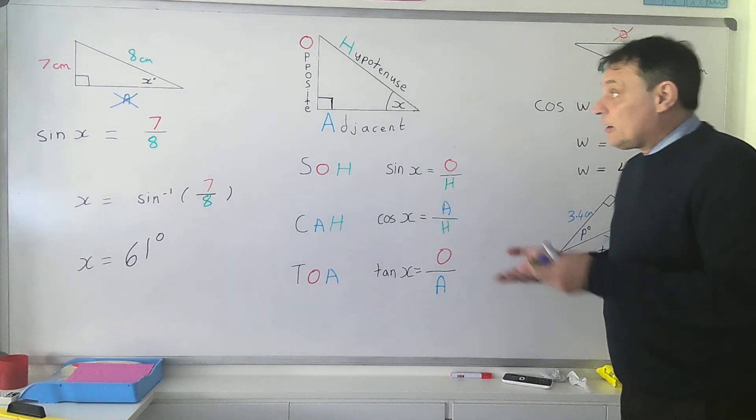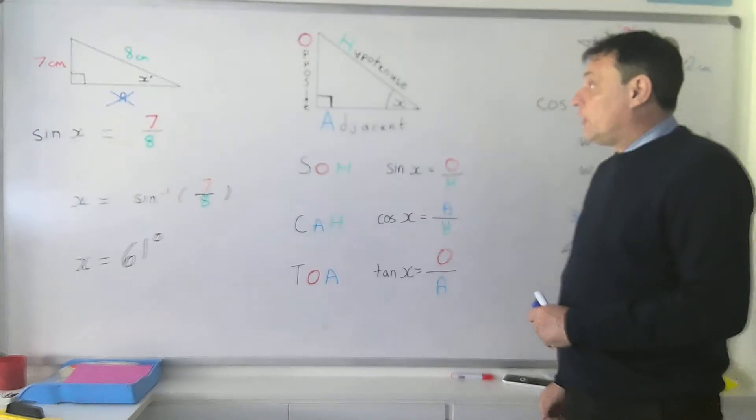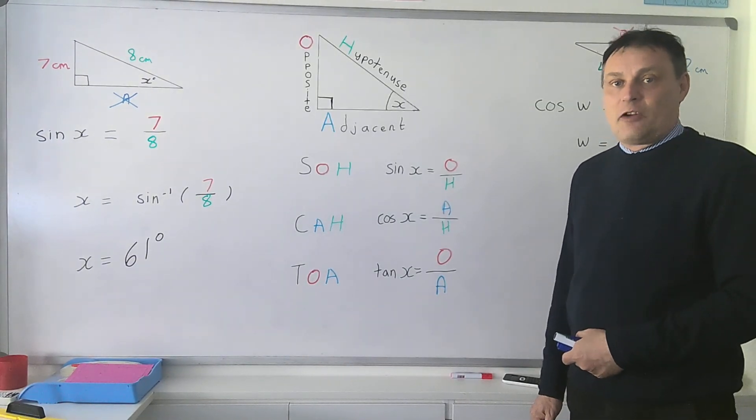So there you have it. That's how to find an angle when using trigonometry, when you're given two sides of the right-angled triangle.